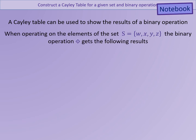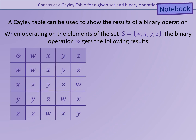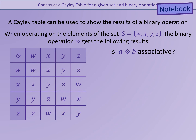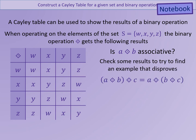We are now going to look at the Cayley table for an operation on the set W, X, Y and Z. Sometimes the binary operation is not explicitly given and the only way we can see the results is from the Cayley table. However, we can still answer questions about the binary operation from the results in the table — for example, whether the binary operation is associative.